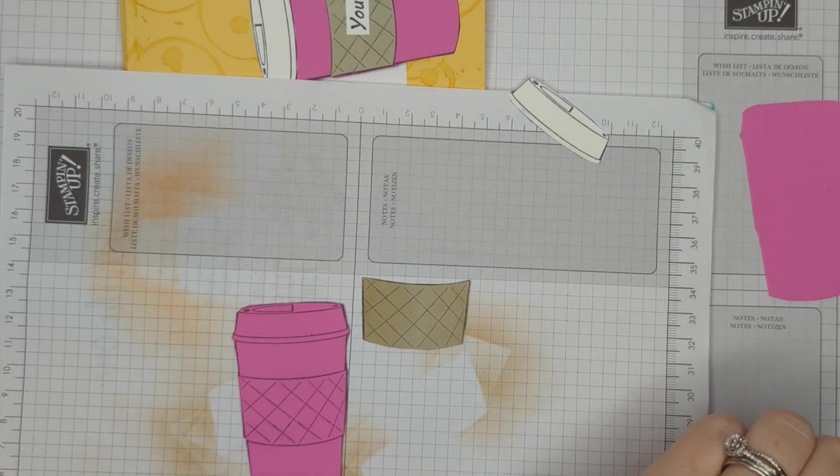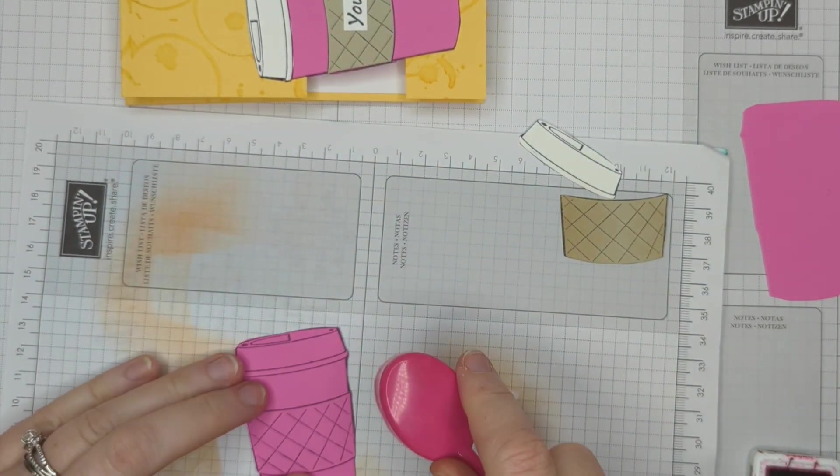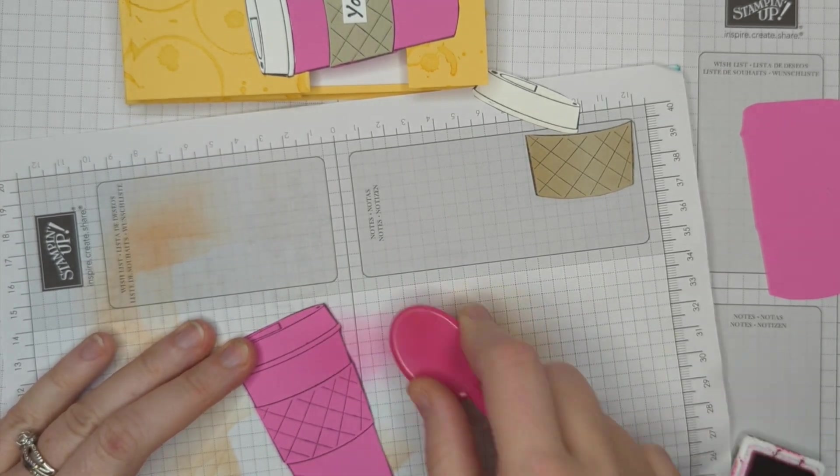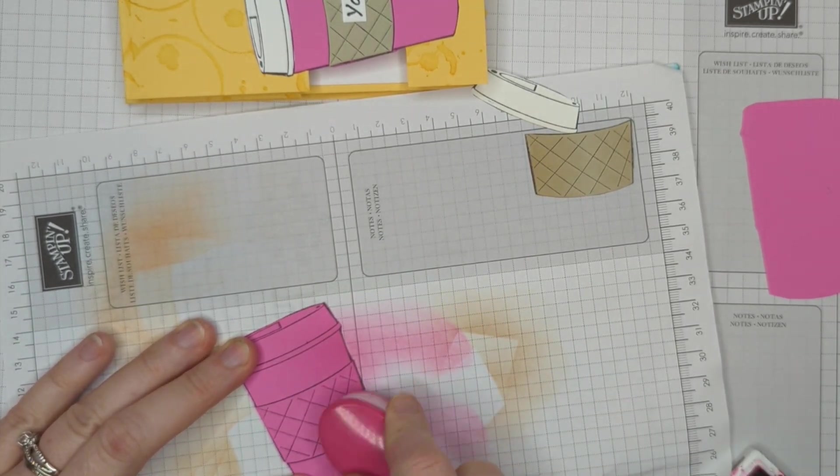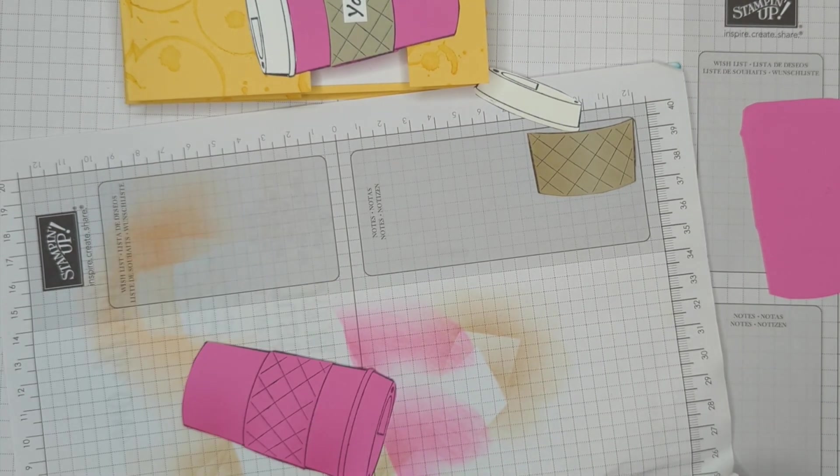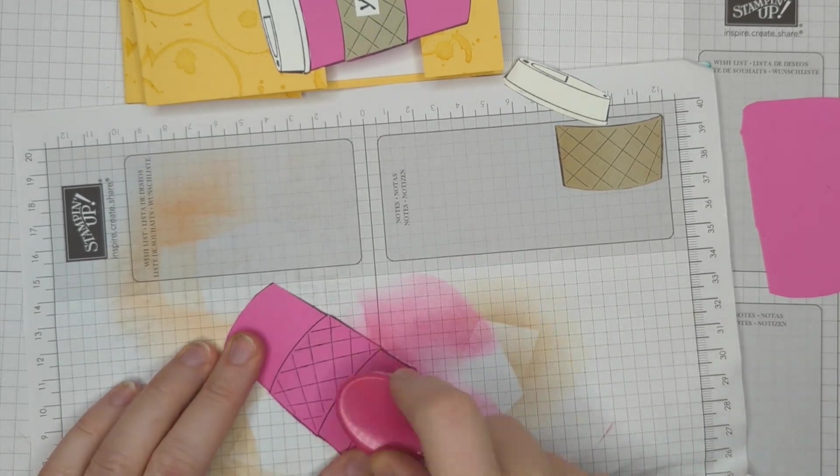And then I'm also going to grab some pink. And I'm not going to worry about getting it anywhere else. It doesn't bother me. And this is pink on pink, so it's not going to be in your face. I'm just sponging some on the sides of the cup. Really focusing on the places where the cup is going to show.